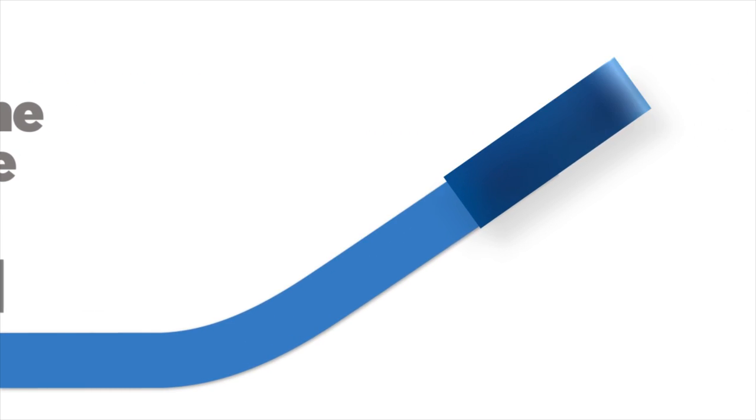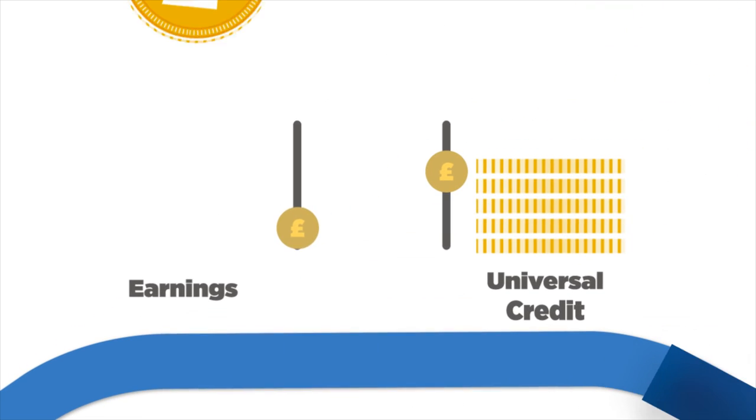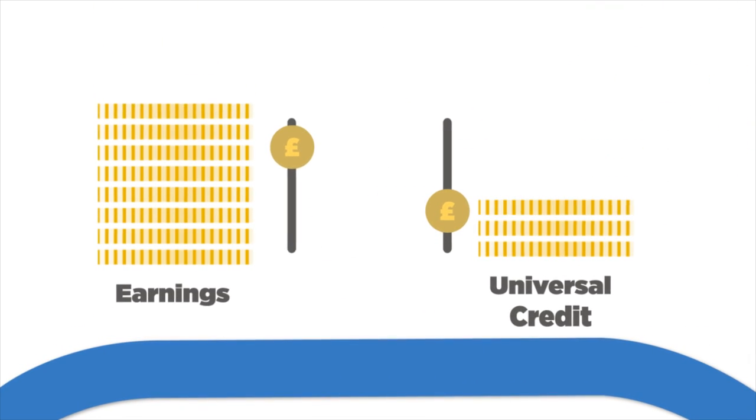Universal Credit tops up your earnings when you start work or increase your hours. Your payment reduces gradually as you earn more so you won't lose all your benefits at once.